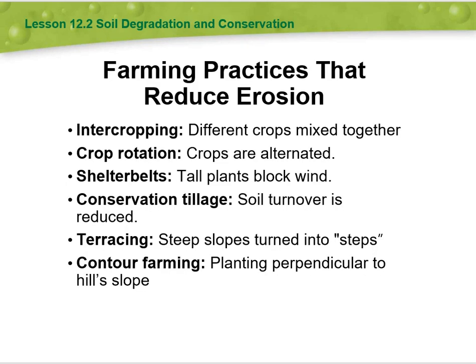In summary, the six key practices are: intercropping, where different crops are mixed together; crop rotation, where crops are alternated; shelter belts, where tall plants block wind; conservation tillage, where soil turnover is reduced; terracing, where steep slopes are turned into steps; and contour farming, where crops are planted perpendicular to the hill slope.